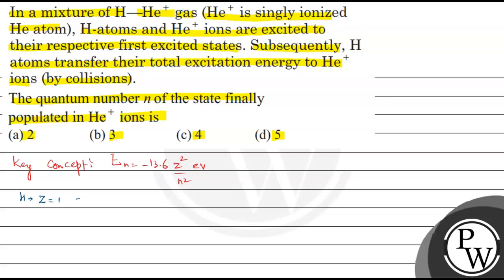If we look at ground state, E1, that implies N is equal to 1. For the first excited state, N is equal to 2. For the second excited state, N is equal to 3, and so on.